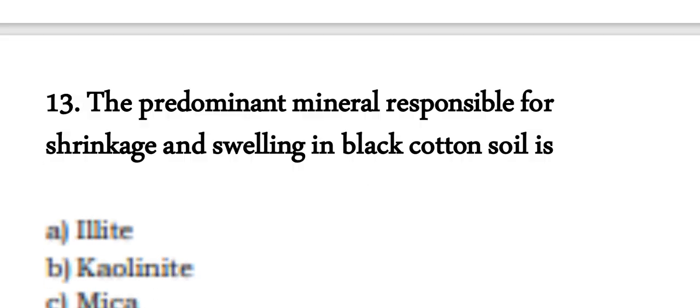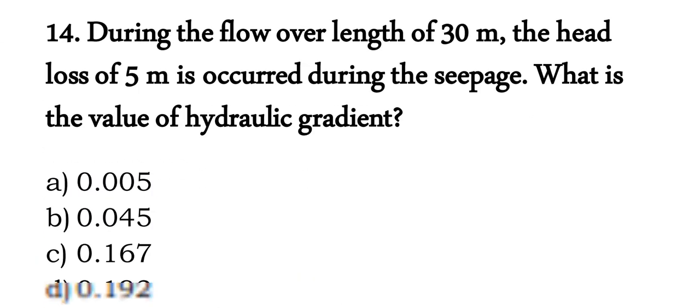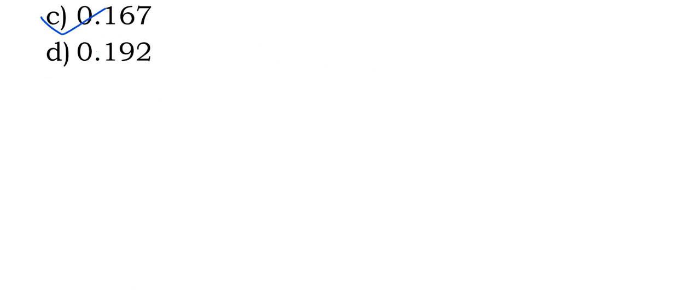Question 14: during flow over a length of 30 meters, head loss is 5 meters. Hydraulic gradient = 5 / 30 = 0.167.